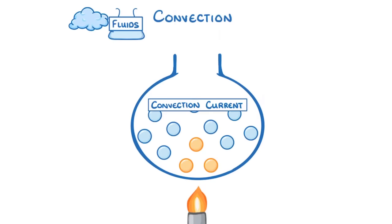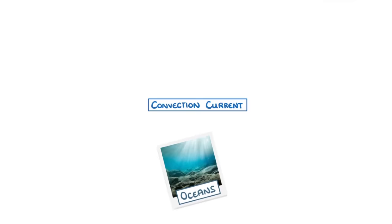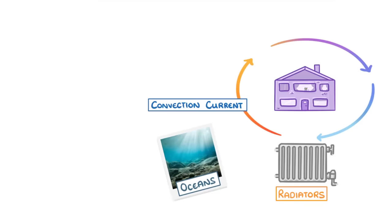Because of this, the cycle would keep on repeating, for as long as the fluid was being heated. And we call this cycle a convection current. We actually see these convection currents all over the place, from oceans to inside buildings, where radiators warm the nearby air and set off the cycle.